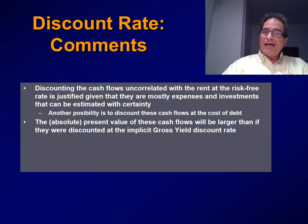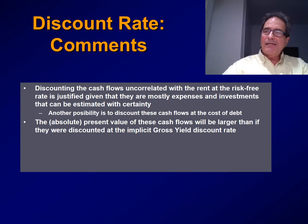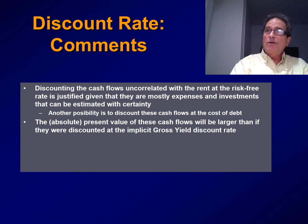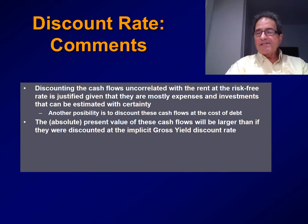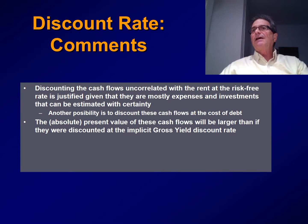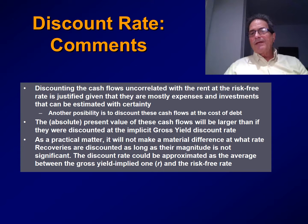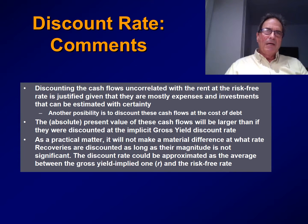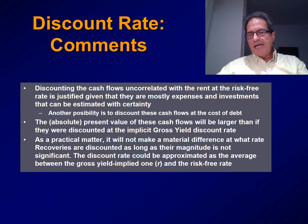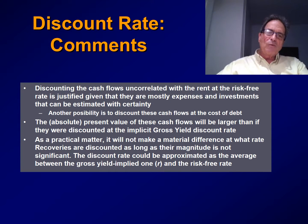Given that we are discounting the outflows — expenses and CAPEX — at the risk-free rate, which is less than the implied discount rate, the present value in absolute terms will be larger. Regarding recoveries, as long as they are not very important in magnitude, it doesn't make a lot of difference at what rate we discount them. A possible solution is to assume some rate in between R and RF — some average between the two. If the magnitude is not very important, this will not make a big difference.